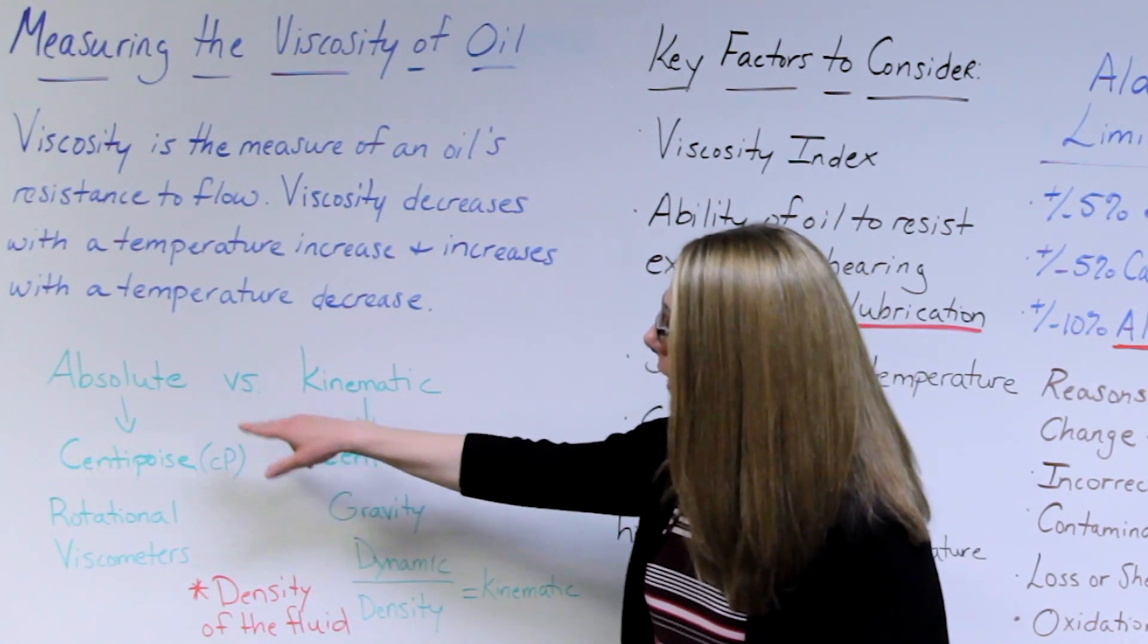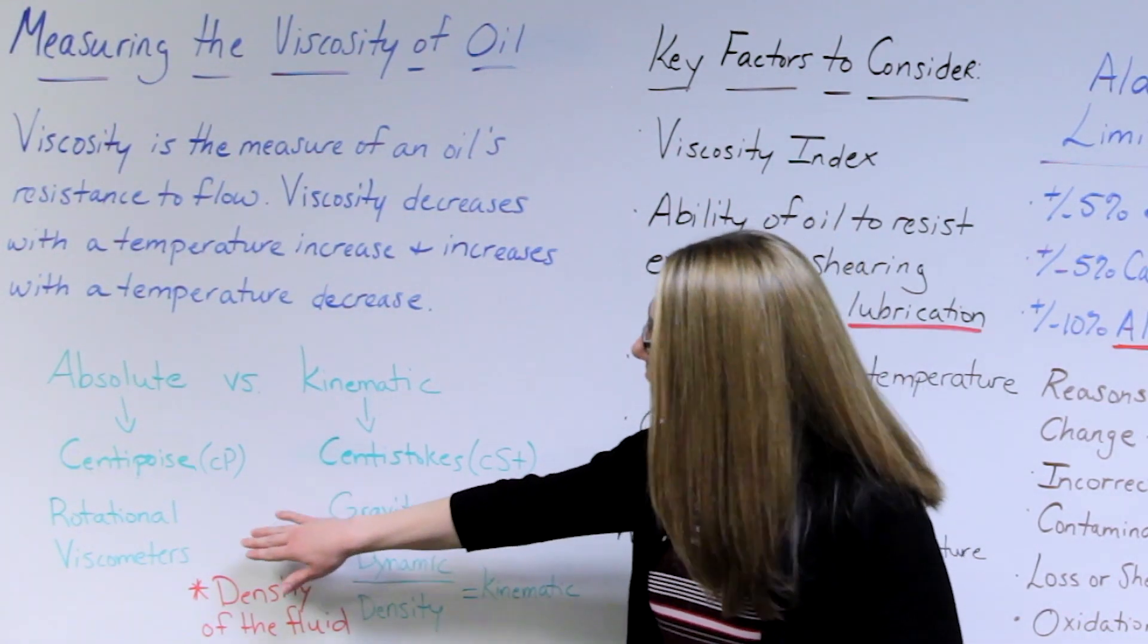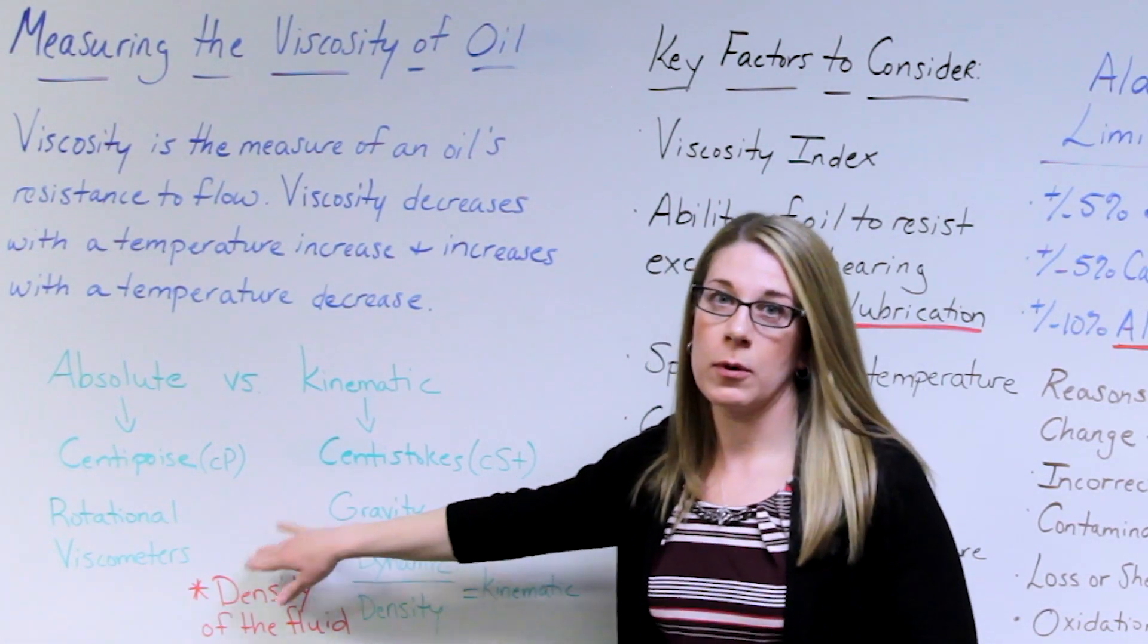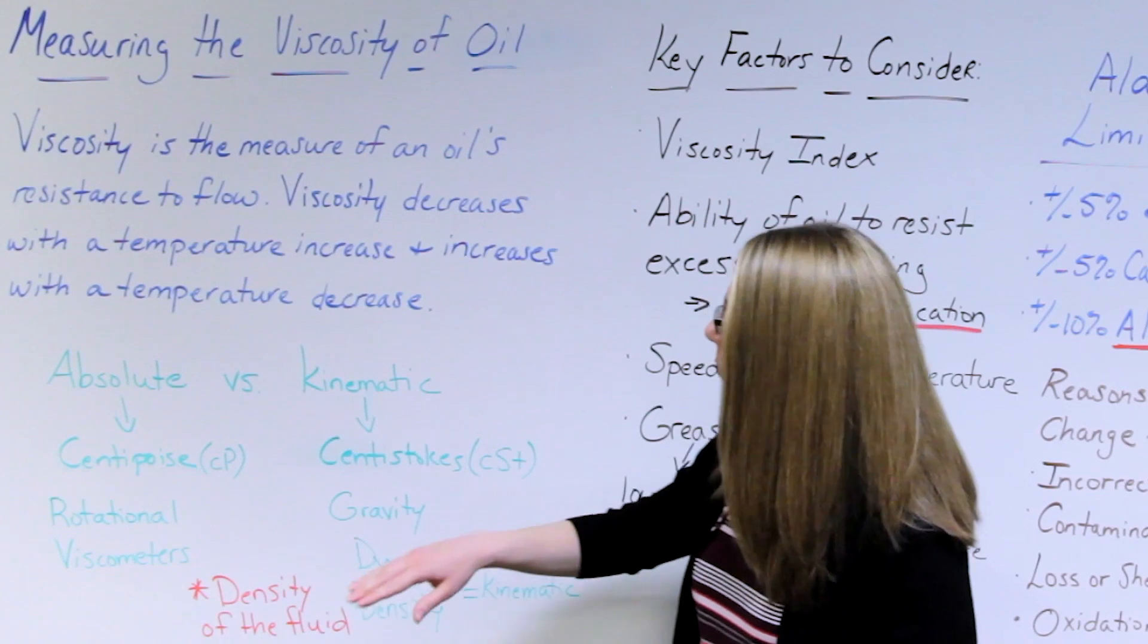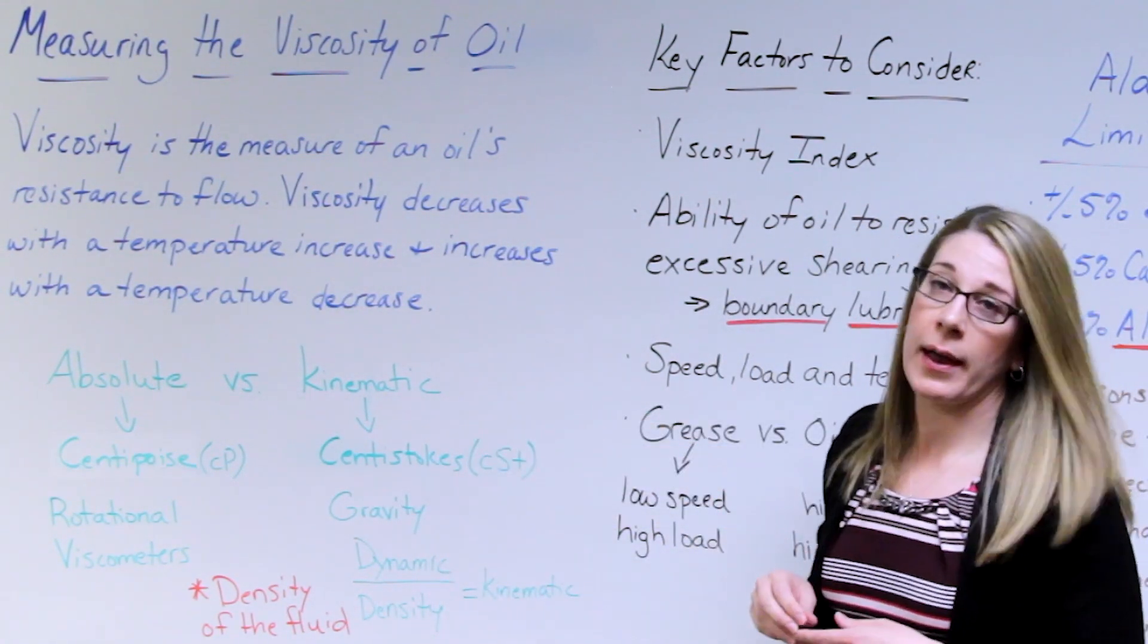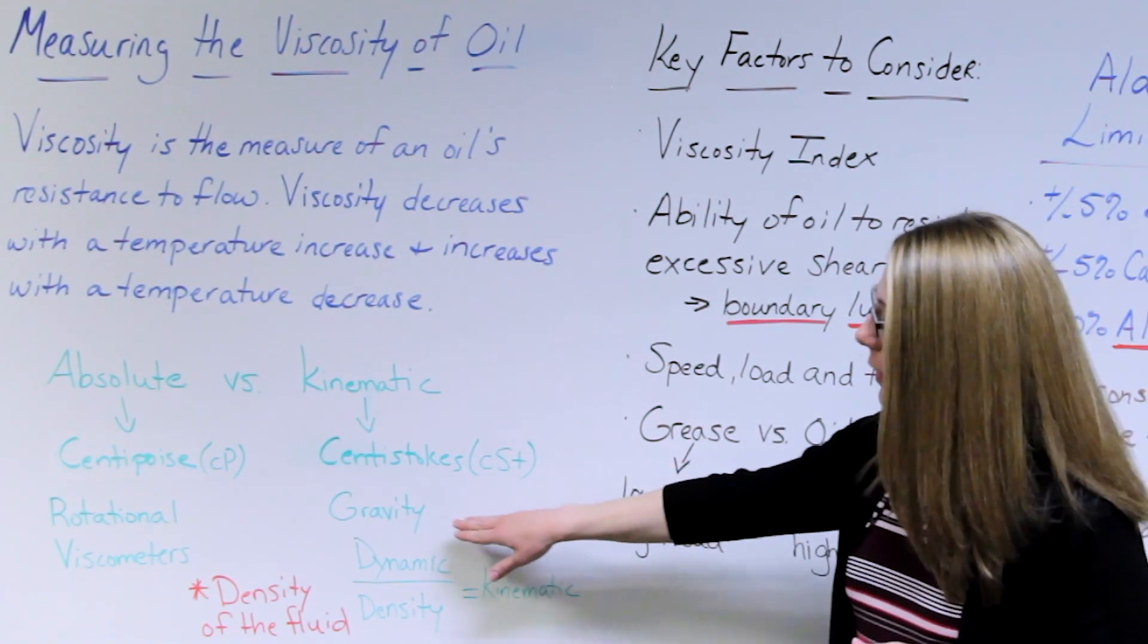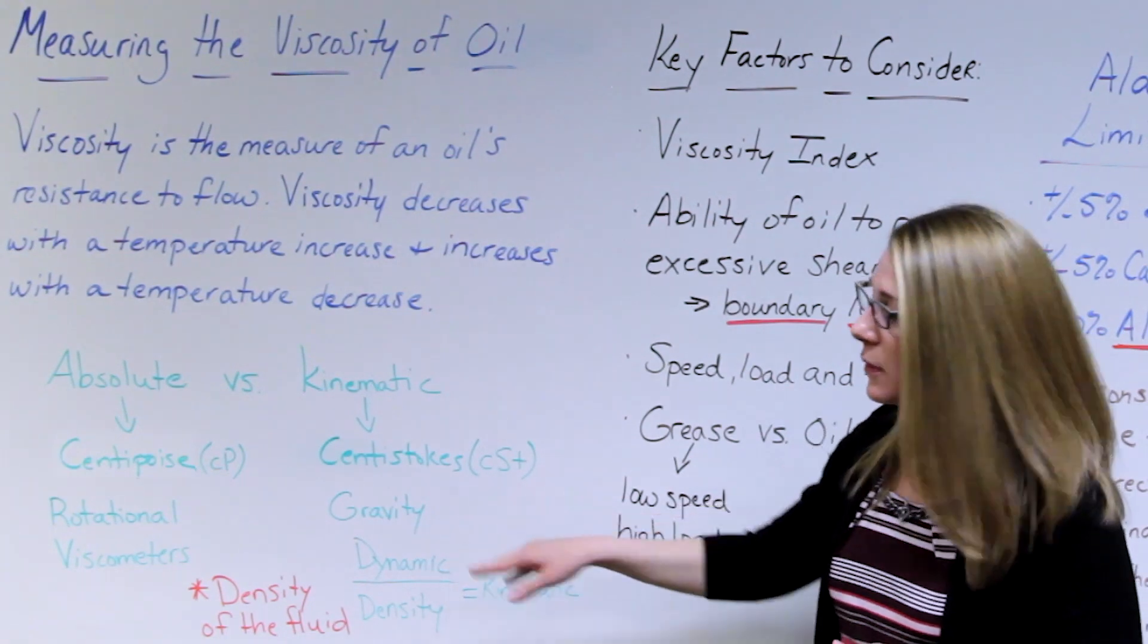In using absolute viscosity you will get a result in centipoise, and typically with rotational viscometers you will get that reading out in centipoise. More commonly in oil analysis labs they're going to be running a kinematic viscosity. That is reported out in centistokes and is using gravity to measure the viscosity.